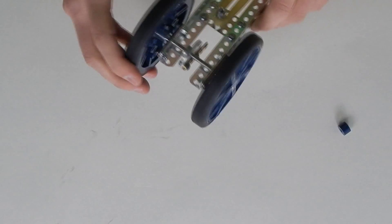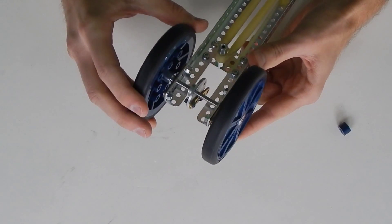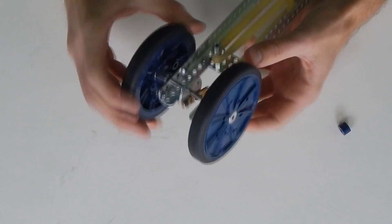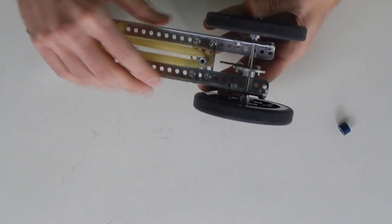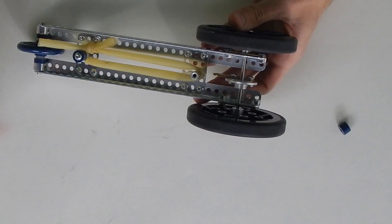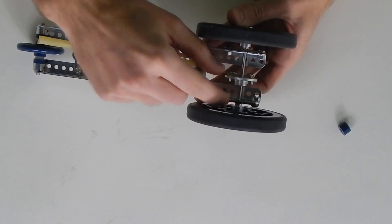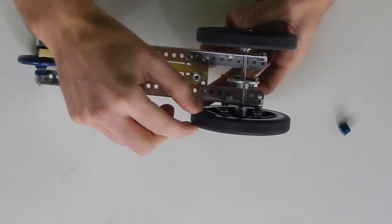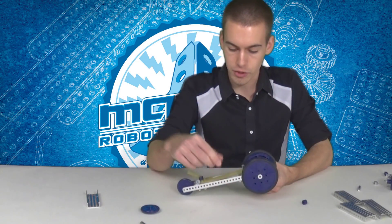Another good spot to put the nylon washer would be between your wheels and other metal parts. For example down here we would have a nylon washer between the bearing plate and the wheel so they don't rub against each other and there's a lot less friction.